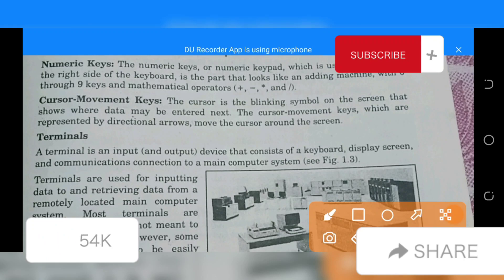The cursor movement keys: the cursor is the blinking symbol on the screen that shows where data may be entered next. The cursor movement keys, which are represented by directional arrows, move the cursor around the screen.